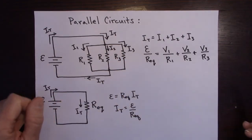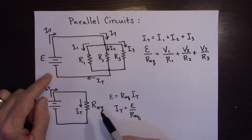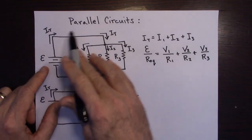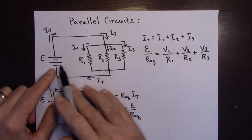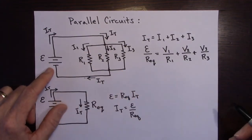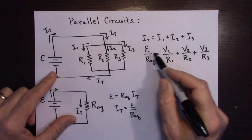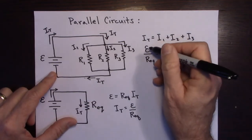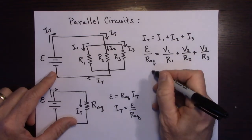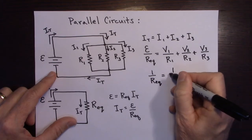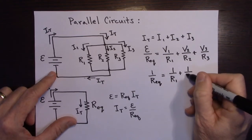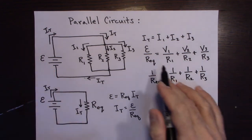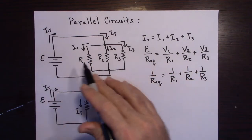Here's the key: by the loop rule, each one of these voltages is the same as E, because going around each loop you gain and drop the same amount. So all the voltages are identical — they all equal E. Since they're all the same, I can divide both sides by E, and they all cancel out, giving the final equation: 1/R_equivalent = 1/R1 + 1/R2 + 1/R3.